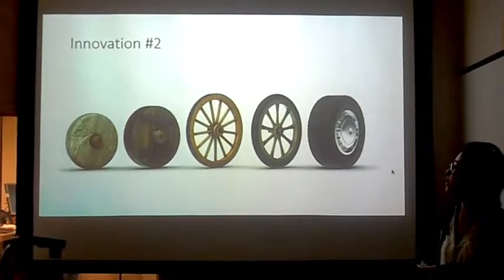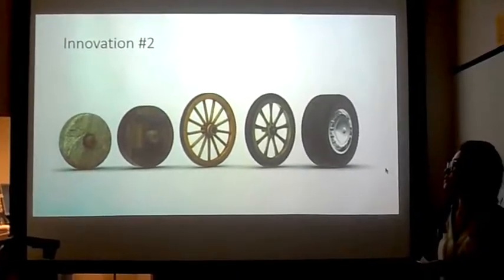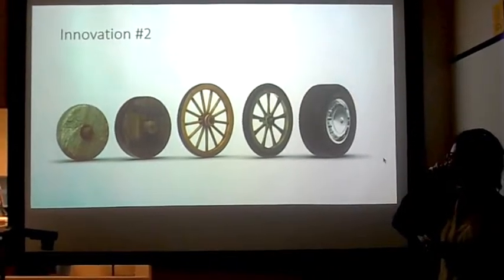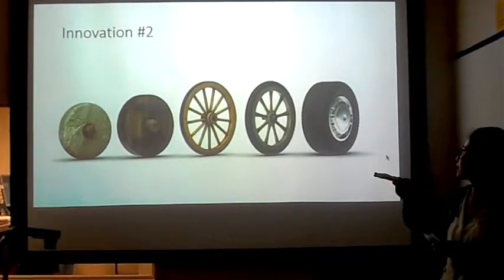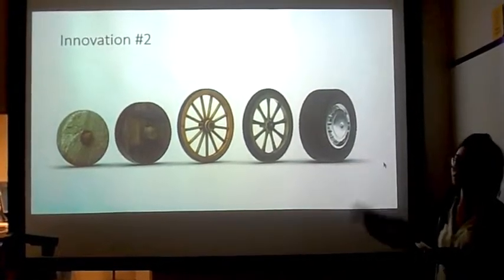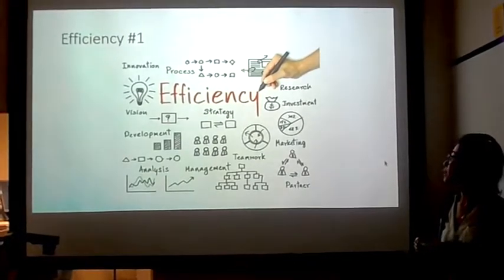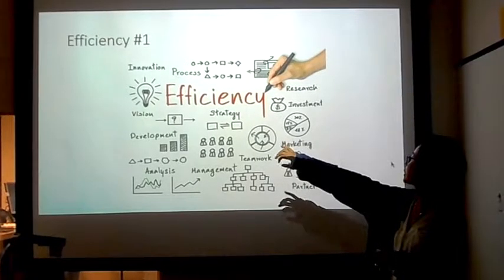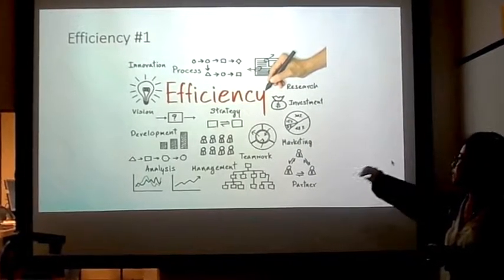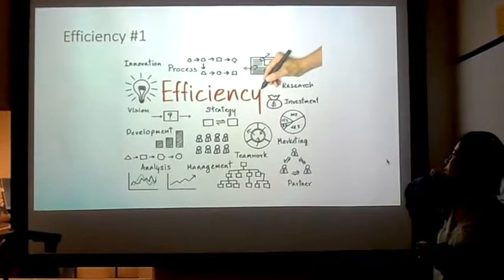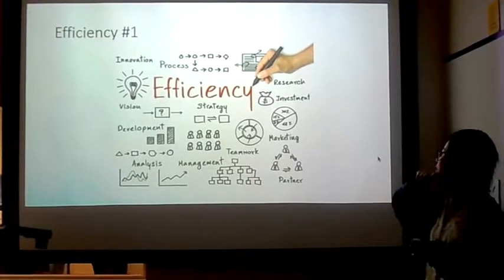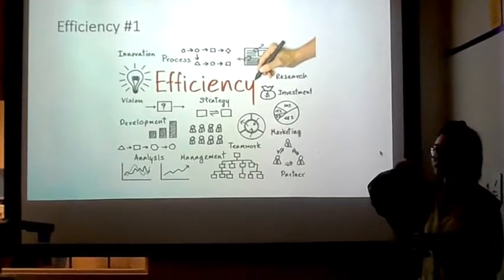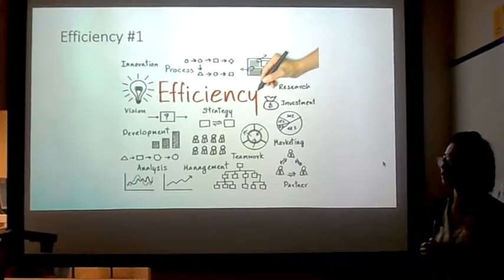Here's another example: the revolution of wheels. It was made from stones, wood, and now tires for our cars. For efficiency, first we have to have innovations, and then it takes a lot of effort to be efficient in producing. It takes teamwork, marketing, management, analysis, and all these efforts to make it work.